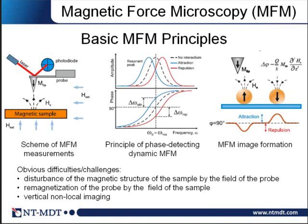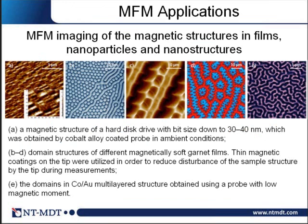When making a magnetic force microscopy measurement, you should adjust several parameters. For example, you can change the thickness of the magnetic cover layer — it might be a high magnetic moment material or a low magnetic moment material. You can also change the distance between the cantilever and the sample. By decreasing the distance you increase the interaction and signal-to-noise ratio; by increasing the distance you decrease disturbance of the probe on the sample and vice versa. Here we will see several examples of magnetic force microscopy applications.